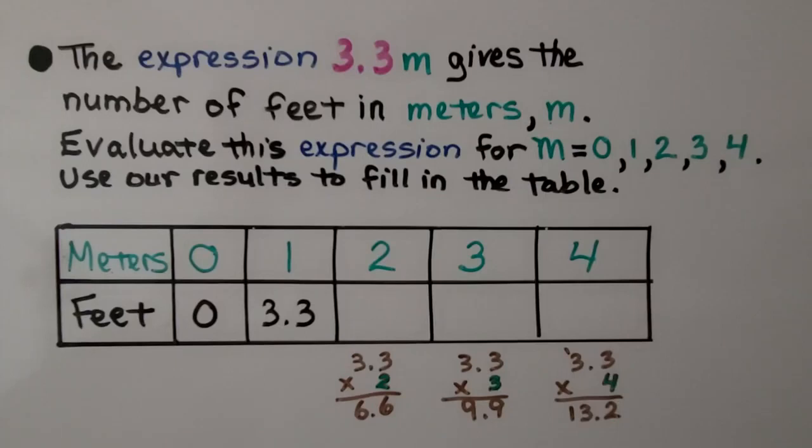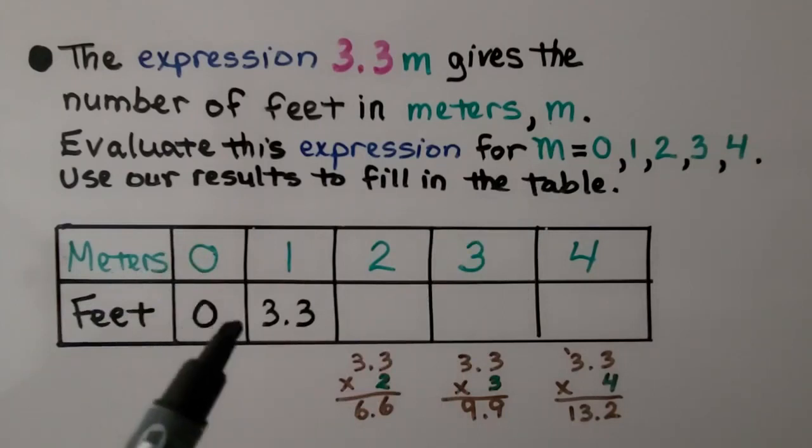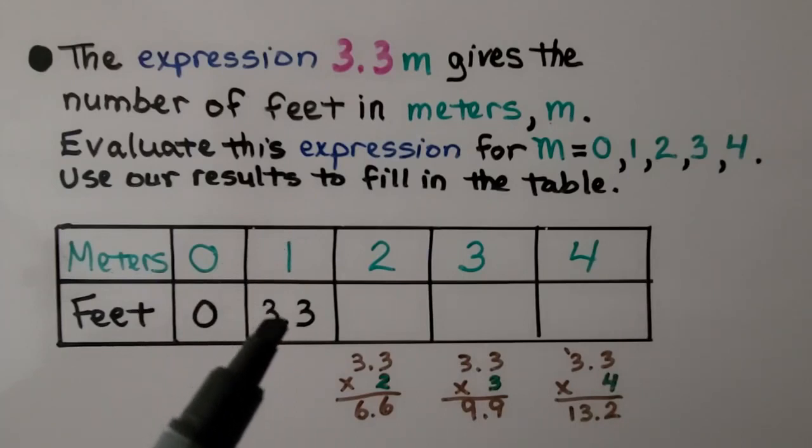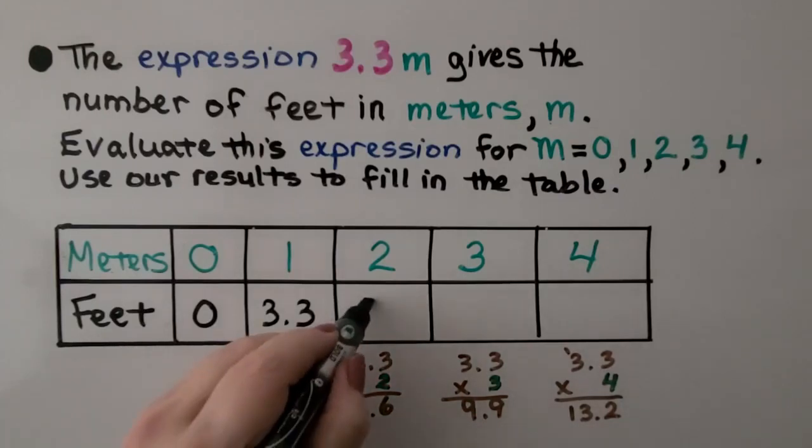The expression 3.3M gives the number of feet in meters M. Evaluate this expression for M equals zero, one, two, three, four. And use our results to fill in the table. So M is the number of meters. If we have zero meters, we have zero feet. If we have one meter, we have 3.3 feet. We would just do 3.3 times one. If we have two meters, we multiply 3.3 times two. We get 6.6 meters. If we multiply 3.3 times three for three meters, we get 9.9 feet.